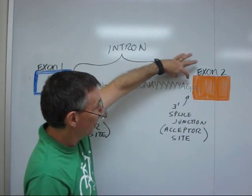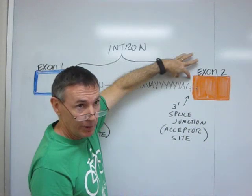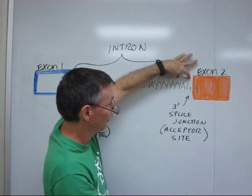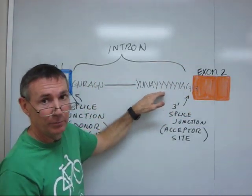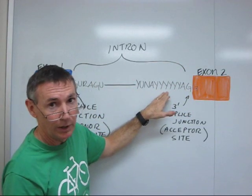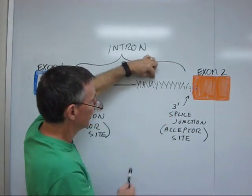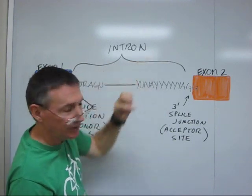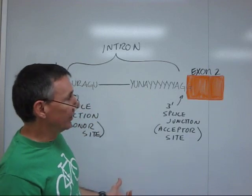Over here at the 3' end of the intron, the last two nucleotides are almost invariably AG. This is the 3' splice junction, or the acceptor site. That AG is typically preceded by a string of pyrimidines, represented here with Y's. And then somewhere over here, there's a consensus sequence, some variability, but always there will be an A in there, and this A is going to be the branch point. So this is the consensus intron.